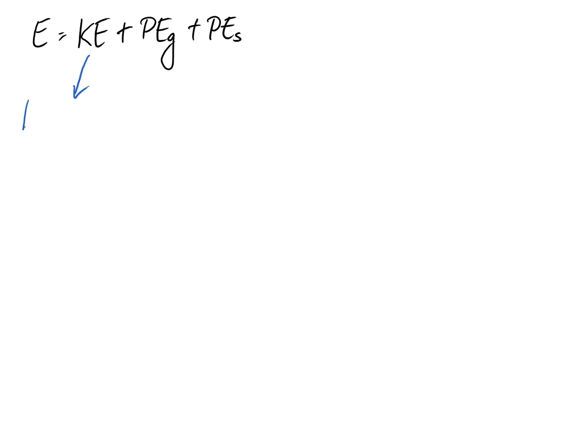So starting off with kinetic energy, we can work out how much kinetic energy we have at a certain point of time using the equation that it's equal to a half mv squared. So m here is the mass of the object in question, and v is the velocity it's travelling at in metres per second.